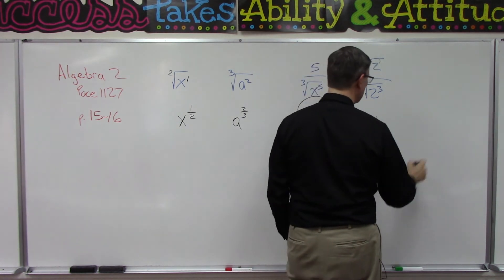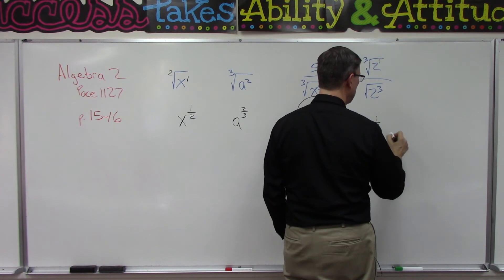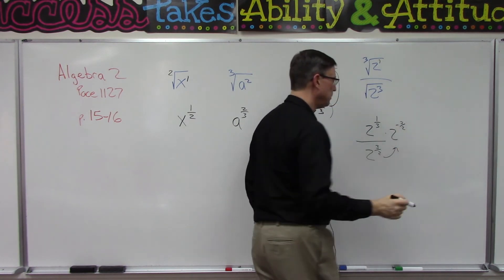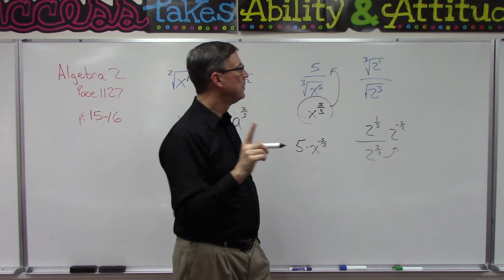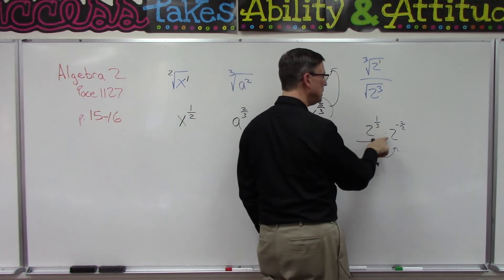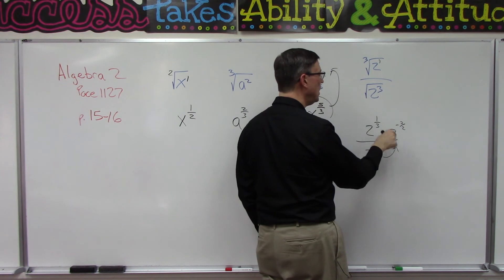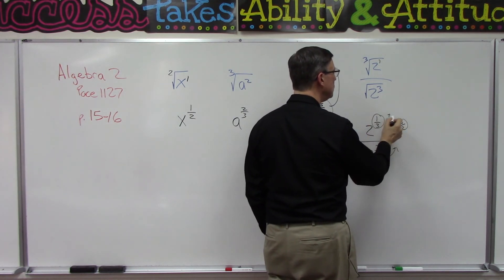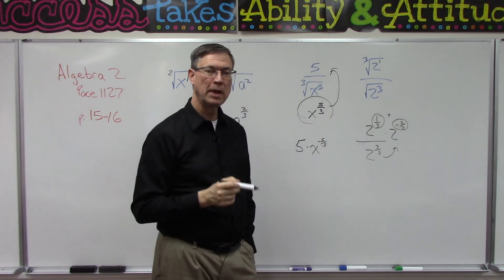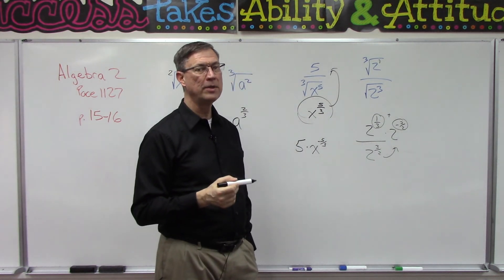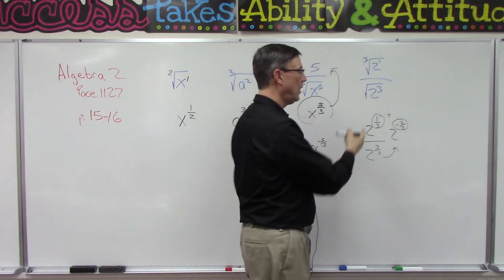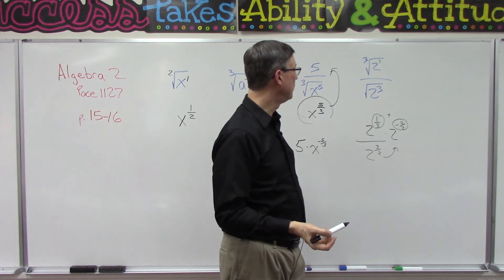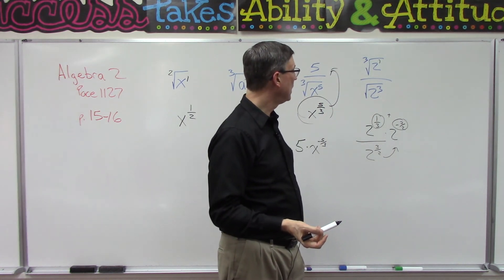Now we can go a step further than we have with these other problems, because when I bring this up it becomes 2 to the negative 3 halves power. Now watch this - because the base is the same, 2 and 2, now I can add these two exponents. When you multiply and the base is the same, you add the exponents.